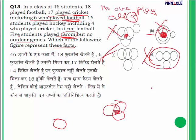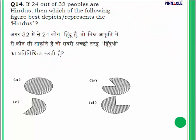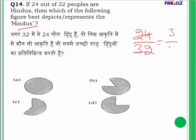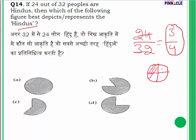Question number 14: if 24 out of 32 persons are Hindu, which figure best represents this? 24/32 simplifies to 3/4. So 3/4 of the circle represents Hindu. Dividing the circle into 4 equal parts, 3 parts are Hindu and 1 part is non-Hindu. The correct representation is option D.